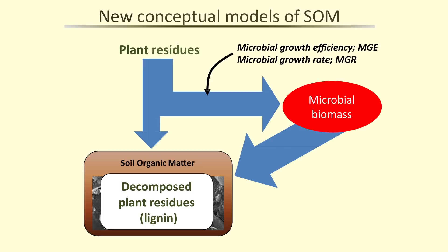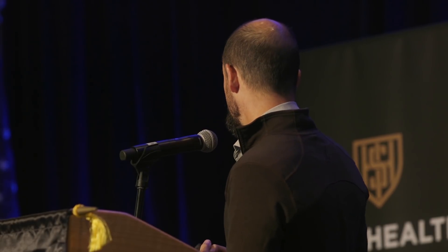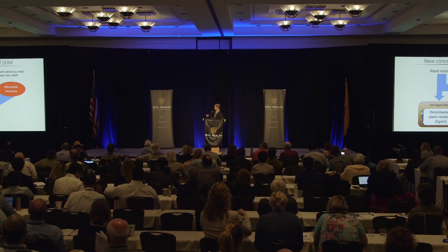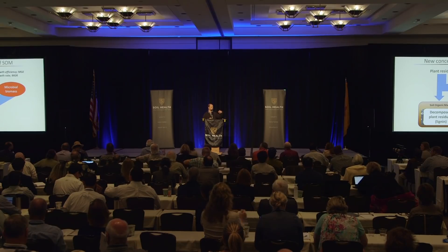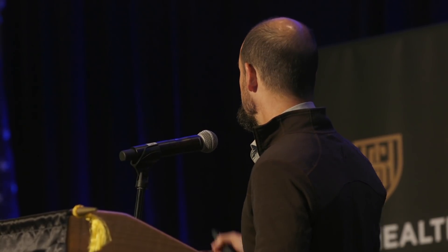We have these new concepts of soil organic matter: plant residues are mostly going through microbial biomass before becoming soil organic matter. Most of the organic matter forming is made up of microbial biomass. This raises the importance of microbial physiological traits in forming soil organic matter — things like the growth efficiency of the microbe. How much of the plant residue that the microbe takes up becomes part of the microbial cell versus being respired as CO2 becomes a really important feature of SOM formation, as does the microbial growth rate.